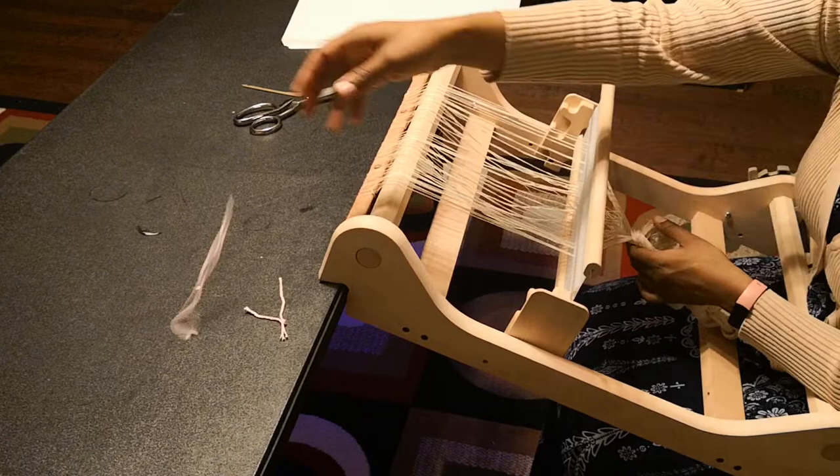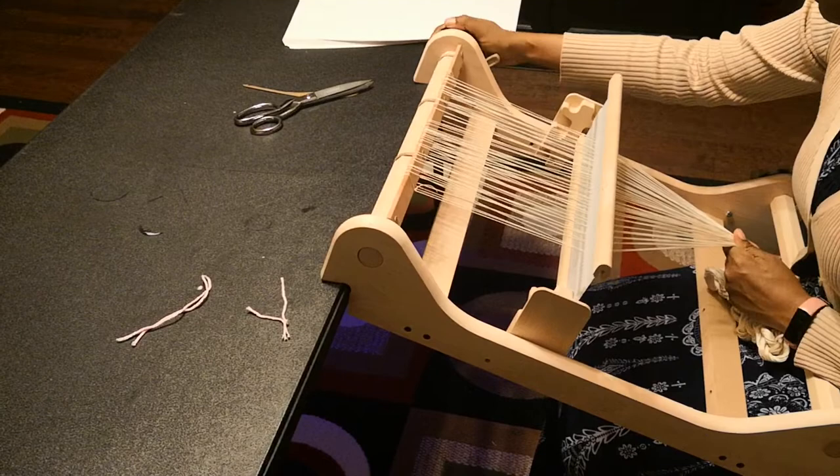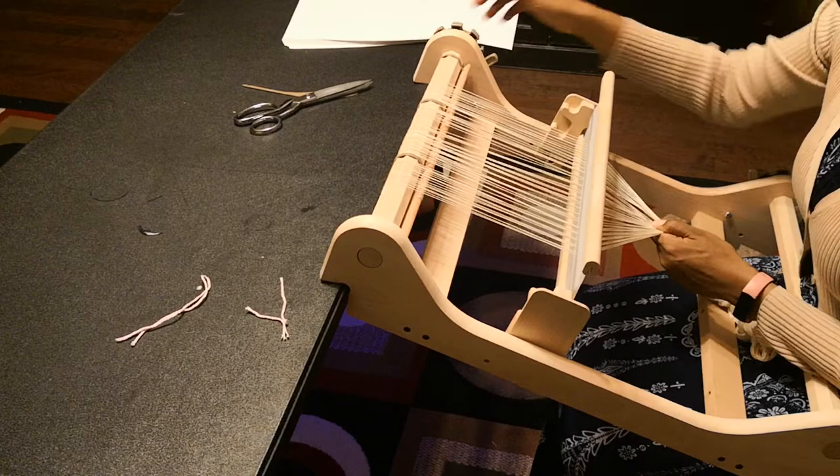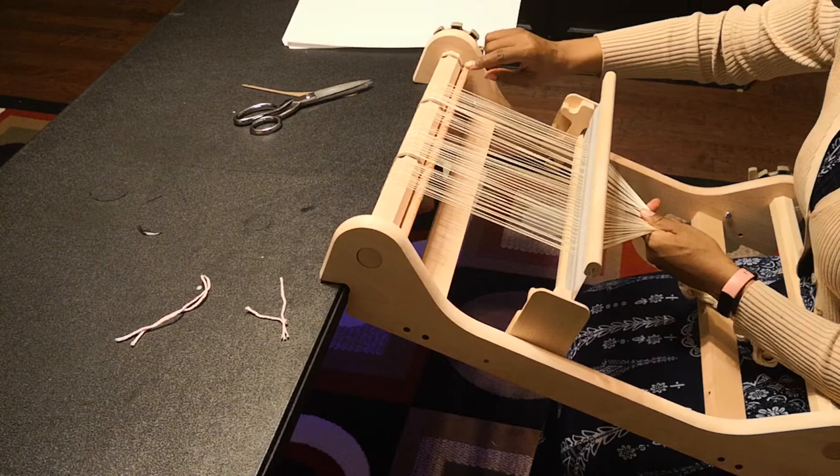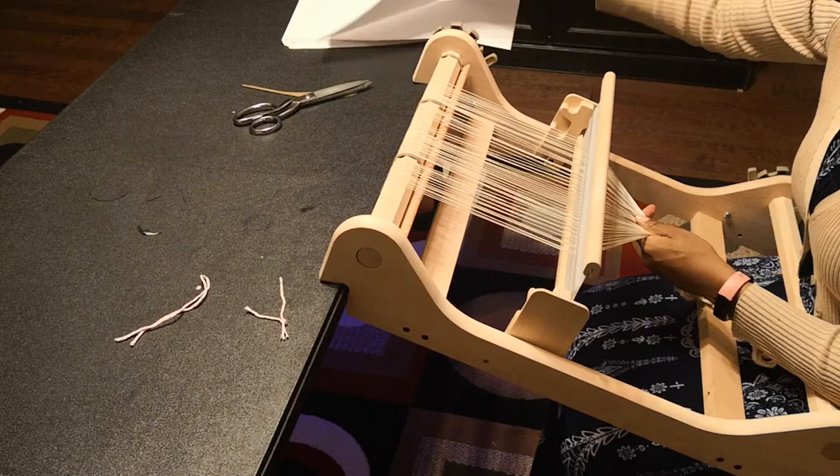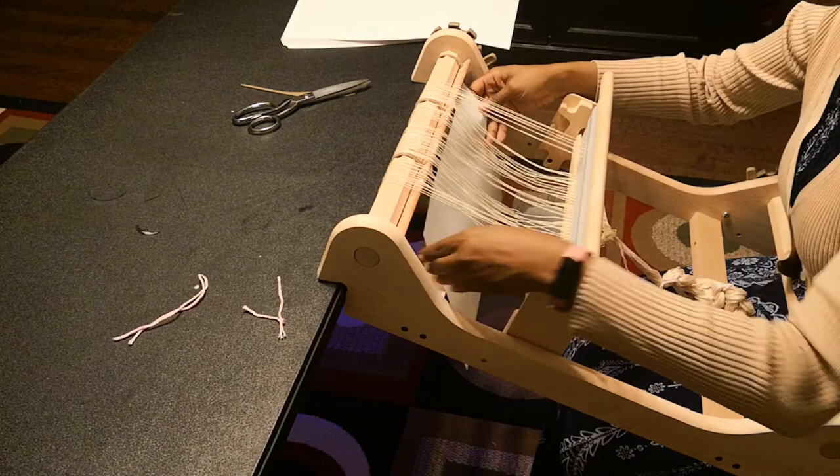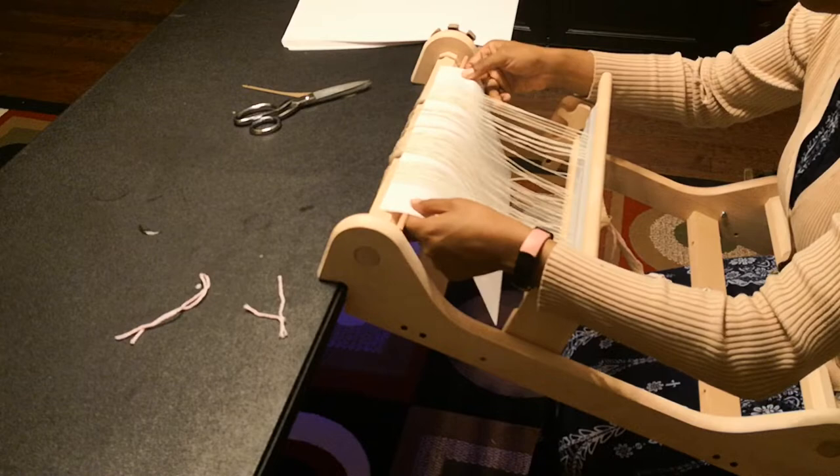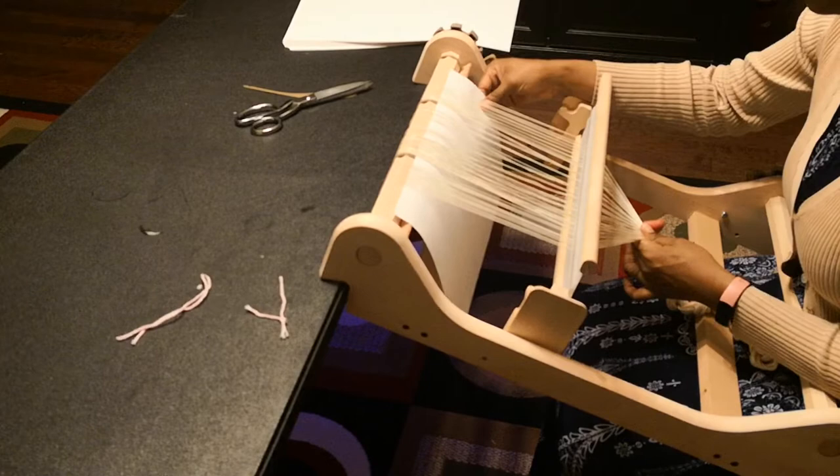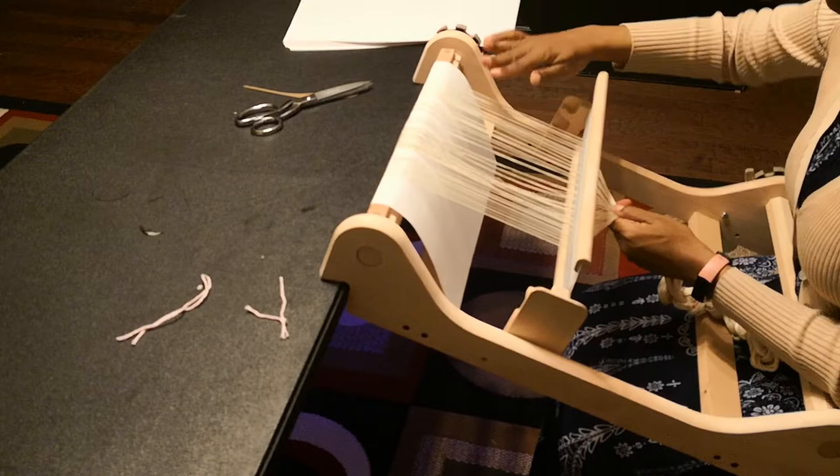If you're going to be going straight from warping to winding it on, then you don't really need to tie a knot. But if you're going to be moving it for any amount of time, then you're going to want to tie the knot. I'm going to start off by winding it around, and just before my apron rod goes under my warp again, I just take a single sheet of this paper and put it right there. I pull my warp and the tension kind of holds the paper in place, and I just wind.